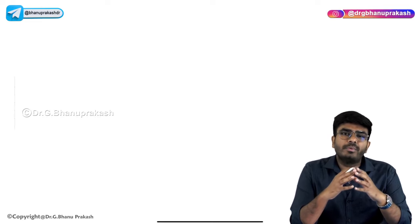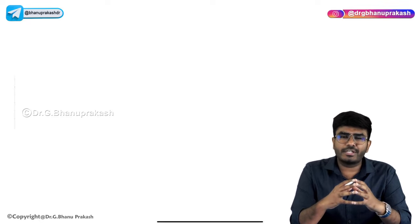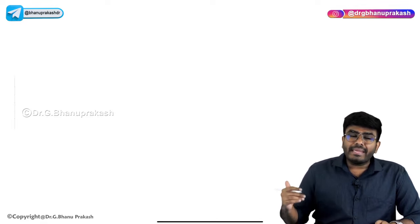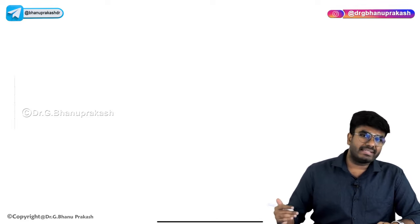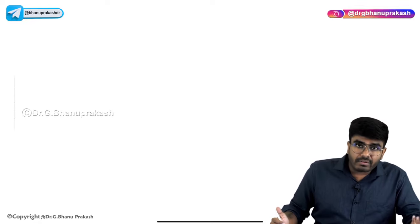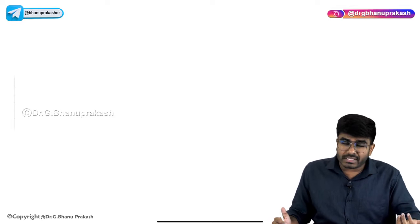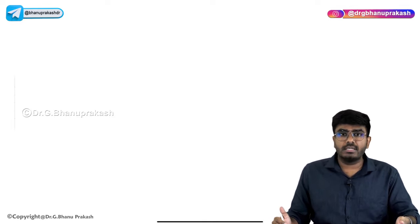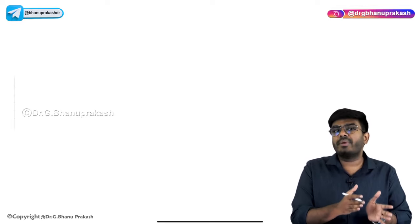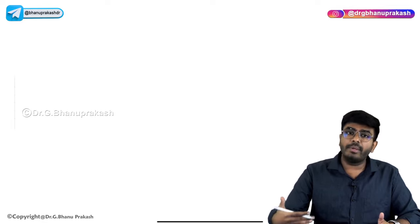Hello guys, now we'll be starting with a new chapter that is Central Nervous System Physiology. In this video, we'll be mainly concentrating on the basics: what is the Nervous System, what is the Central Nervous System, what is the Peripheral Nervous System, what are nerves, ganglia, receptors, first order neurons, second order neurons. After discussing basics, in the later part of the videos, we'll be going into the concepts.